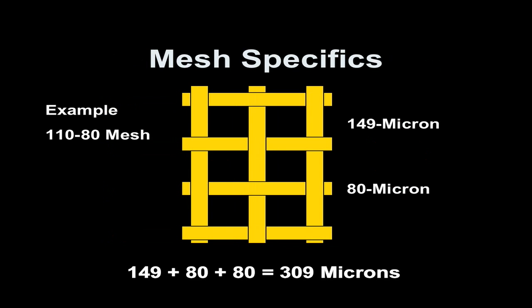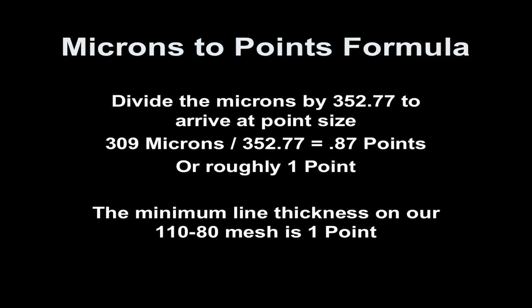Most drawing programs allow you to select the line width or weight in points. Converting microns to points is an easy process given the following formula: you simply divide the total microns of one mesh opening and two thread diameters by 352.77 to arrive at the correct point size. In this case, we're using a 110-80, which has a minimum printability of 309 microns. We divide 309 by 352.77 and arrive at 0.87 points, or roughly one point line weight.